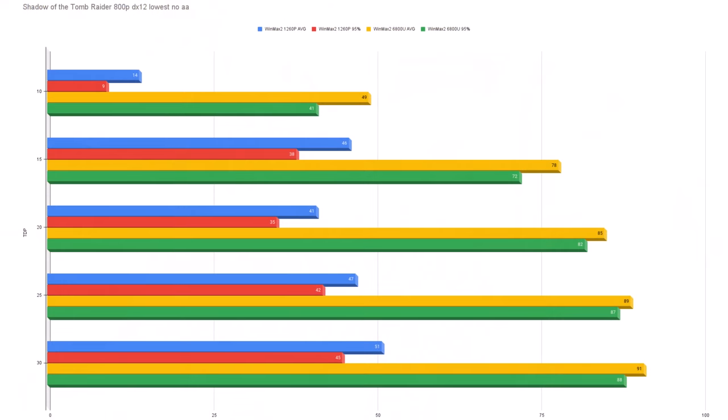The last comparative benchmark is Shadow of the Tomb Raider, running at 800p using DirectX 12, lowest preset, no anti-aliasing. Once again, AMD is taking a gigantic lead over Intel — Intel being represented by red and blue, AMD by gold and green. The pattern is very clear.